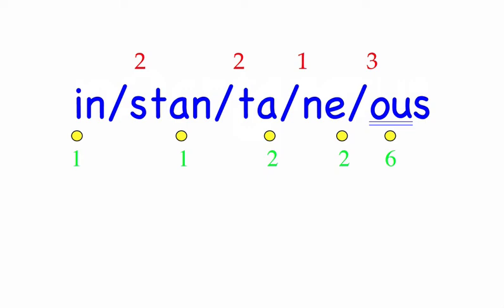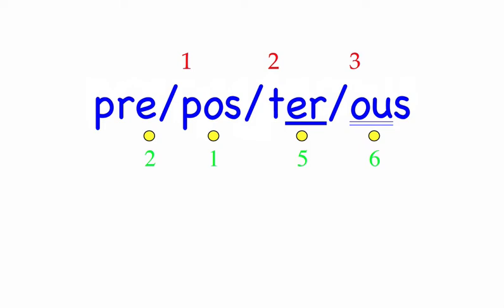Preposterous. Your proposal is preposterous. This is a four-syllable word. First syllable: Pre, three sounds, P-R-E. Pos, three sounds, P-A-S. Ter, two sounds, T-Er. Us, two sounds, U-S. Pre-pos-ter-us. Mark the word. Preposterous.